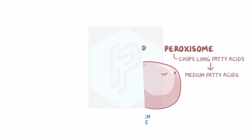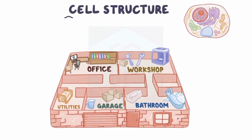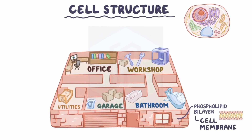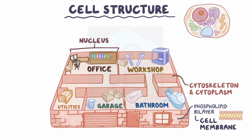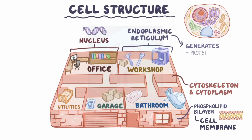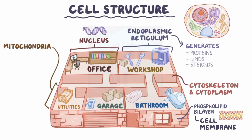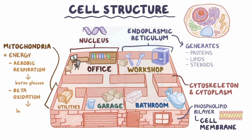Alright, as a quick recap. The phospholipid bilayer forms the cell membrane, which are the tiny walls of the cell, and the internal structure is made up of a cytoskeleton in cytoplasm. The key organelles include the nucleus, which houses the DNA; the endoplasmic reticulum, which generates proteins, lipids, and steroids; and the mitochondria, which provides the cell with energy using aerobic respiration, which burns glucose, or beta-oxidation, which burns fatty acids.